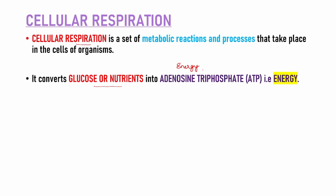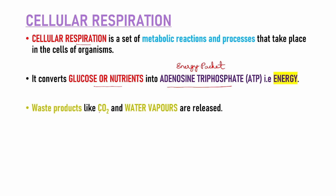Jab hamaari body tak nutrition pahunchta hai, toh wahaan pe energy produce hoti hai. Usse energy packets ko hum kehte hai Adenosine Triphosphate — that is ATP molecules. Mitochondria produce kerta hai ATP molecules. So cellular respiration mein jo glucose nutrients hote hai, unhe energy packets mein convert kiya jaata hai, aur us energy packets ko hum kehte hai ATP. Ye process ke baad thode se waste products bante hai jaise ki carbon dioxide aur water vapors.